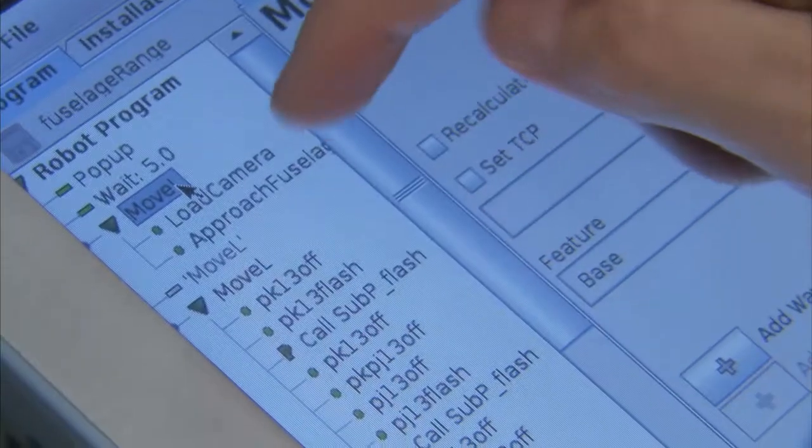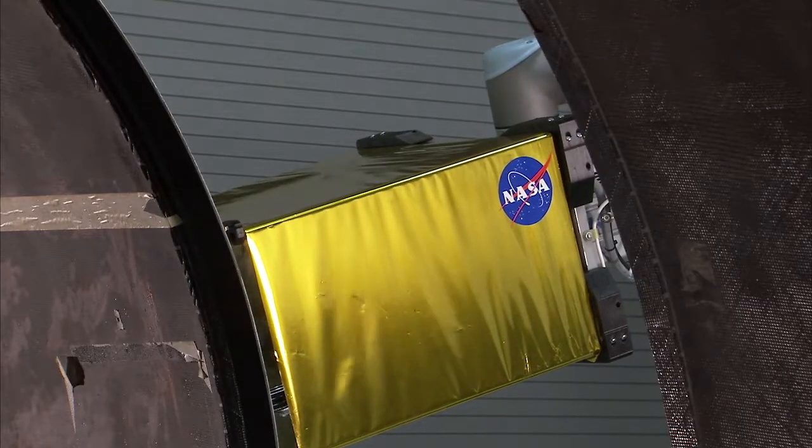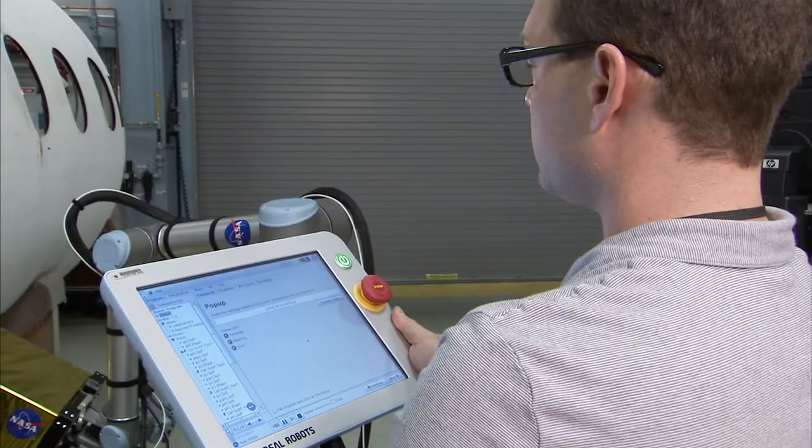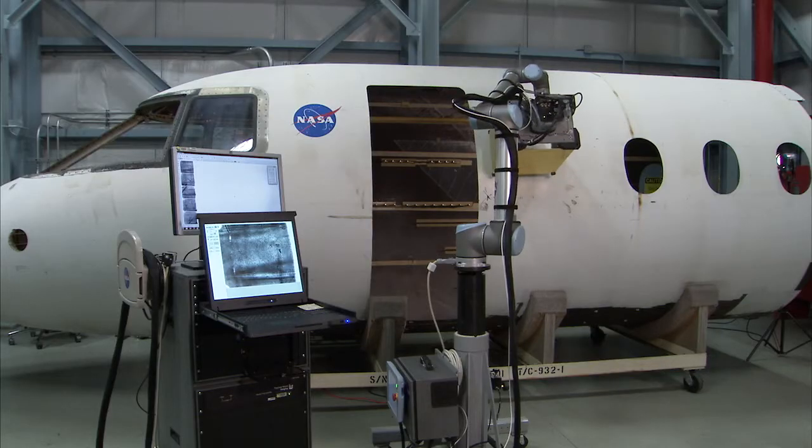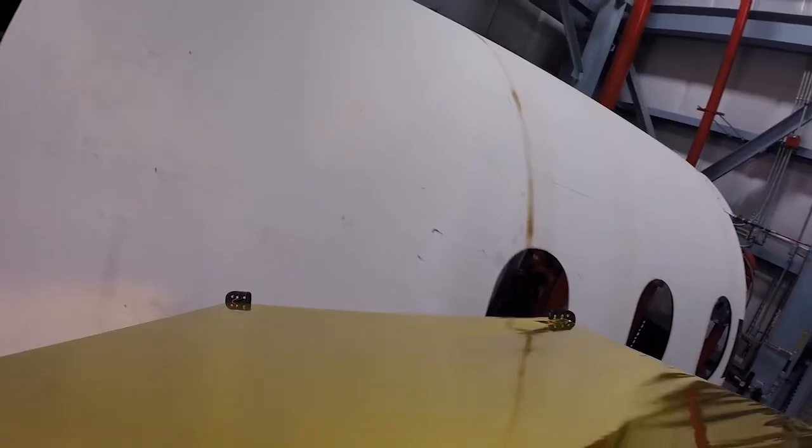Once it's positioned, we'll send a signal to the computer. The computer will then trigger the inspection system, fire the flash lamps, and acquire the temperature data that tells us about what's going on inside the structure. And then it will send a signal back to the robot to move to the next location.